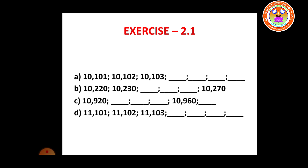For the first question: 10,101, add one to get 10,102, add one to get 10,103. The next ones: add one to get 10,104, then 10,105, then 10,106, then 10,107.